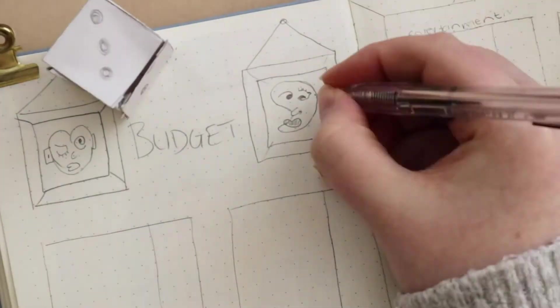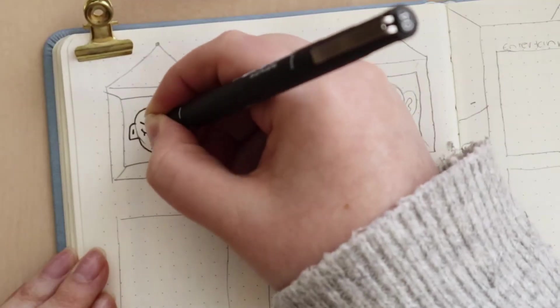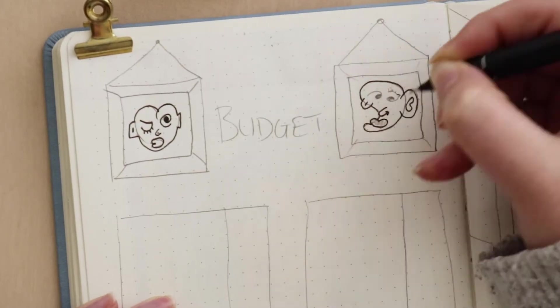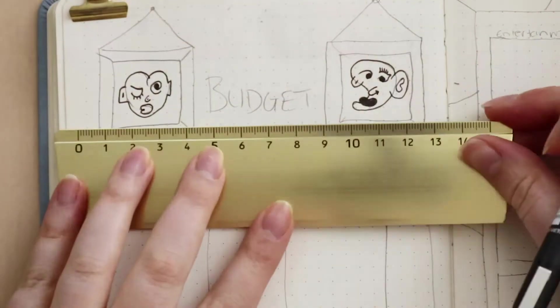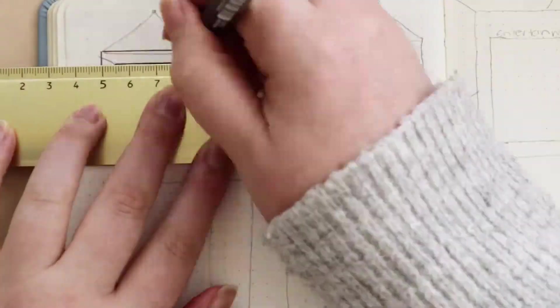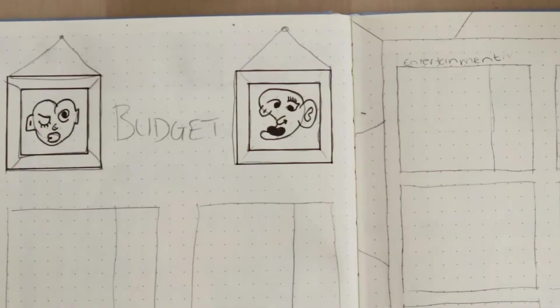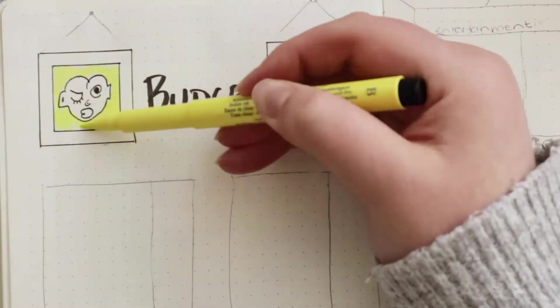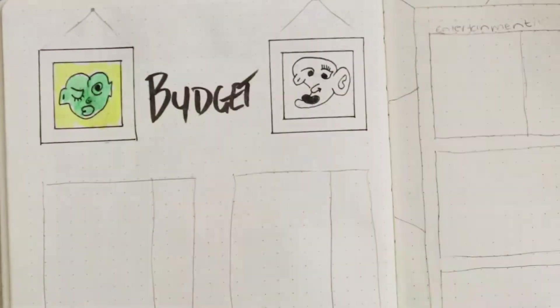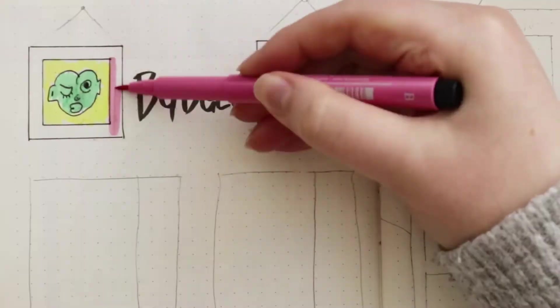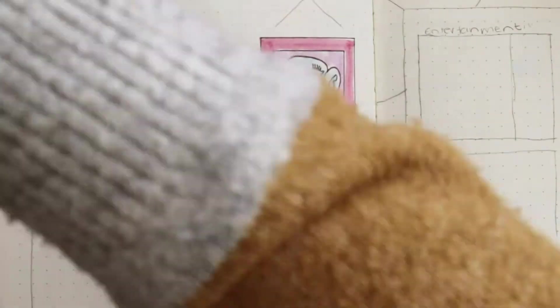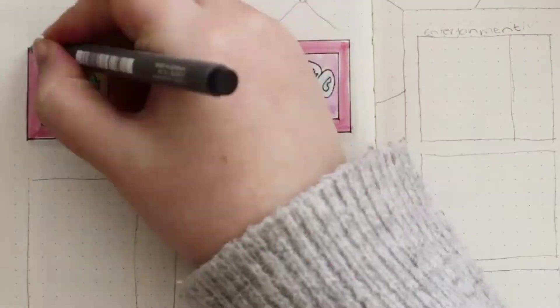Moving on to my next monthly spread is my budget spread. I have this in every month for obvious reasons. I use the same method just for these little faces at the top to frame the title, with the dice rolling. The one on the left looks a little bit scary and angry, the one on the right looks really cute. I just love how every time you use this method you get a different kind of face and personality.